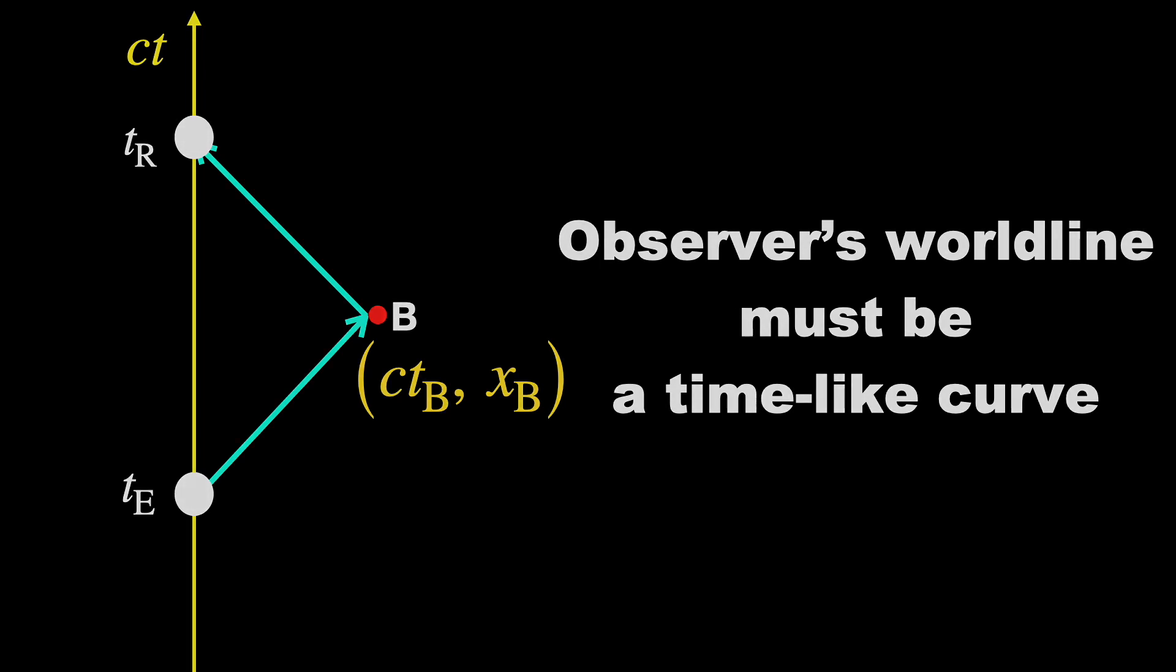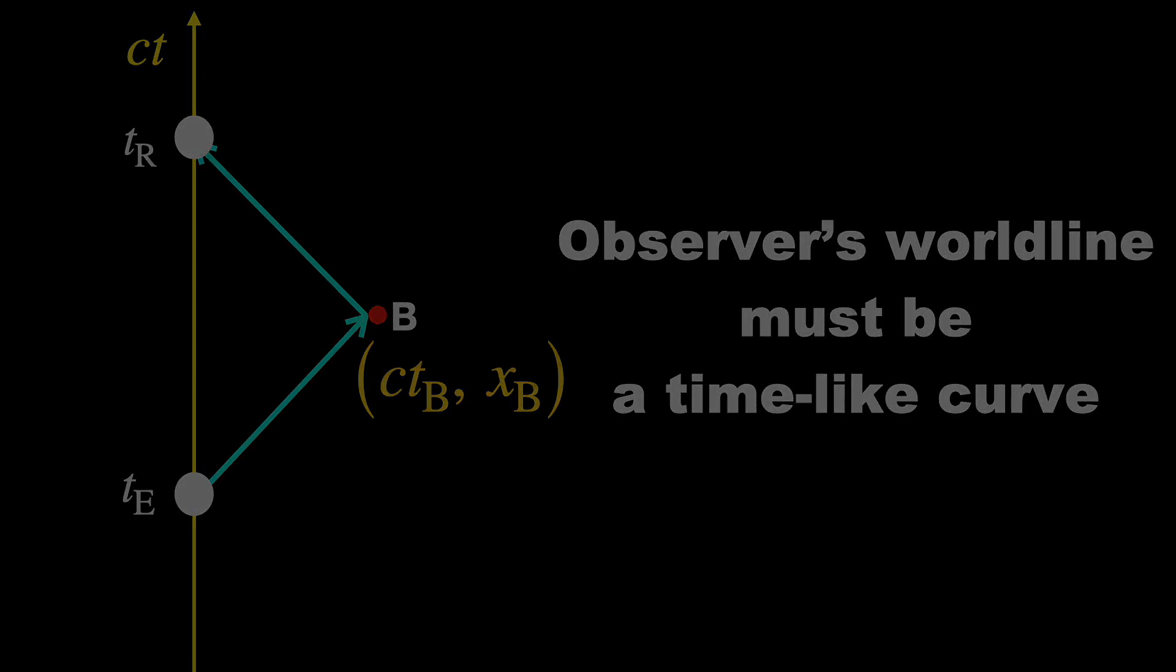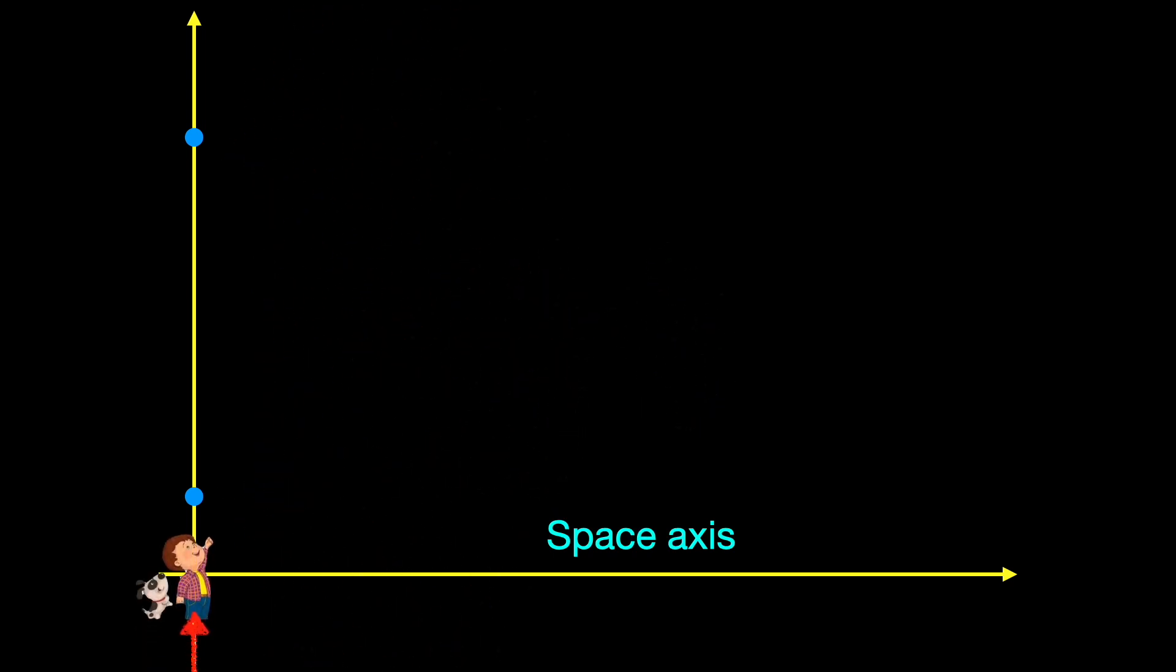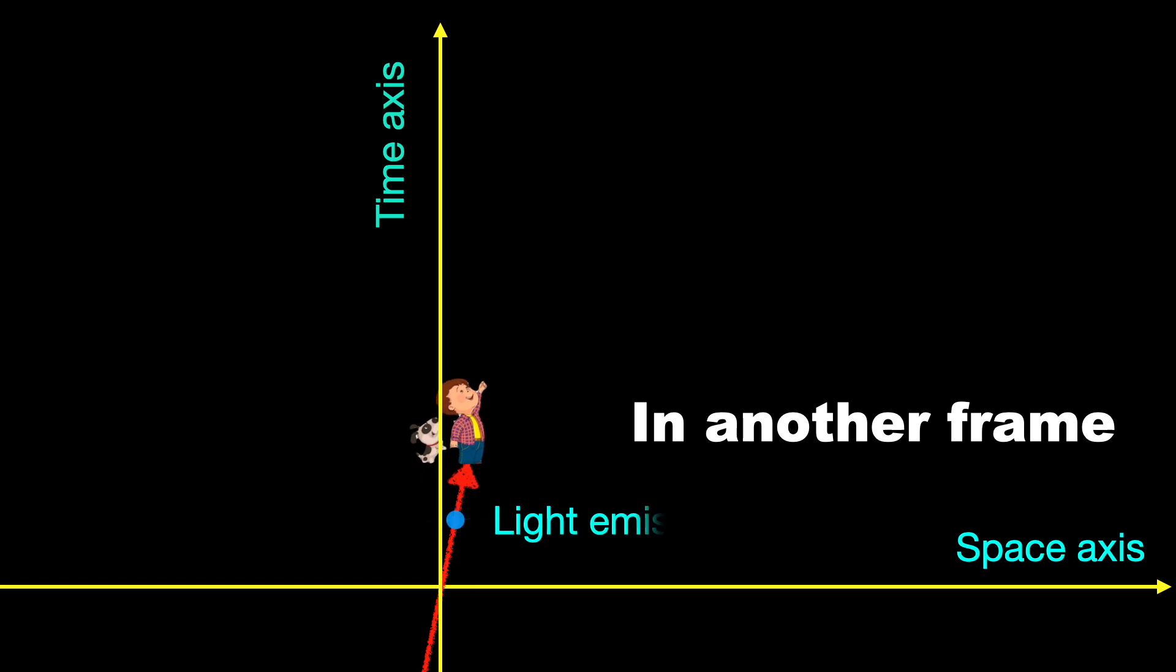We are talking about inertial observers in their inertial frames for now, so this curve is a time-like straight line. In a space-time diagram drawn by an inertial observer, his own world line is nothing but the vertically upward time axis. It will look like a slanted straight line within the light cone in a space-time diagram drawn by observers in some other inertial frame.